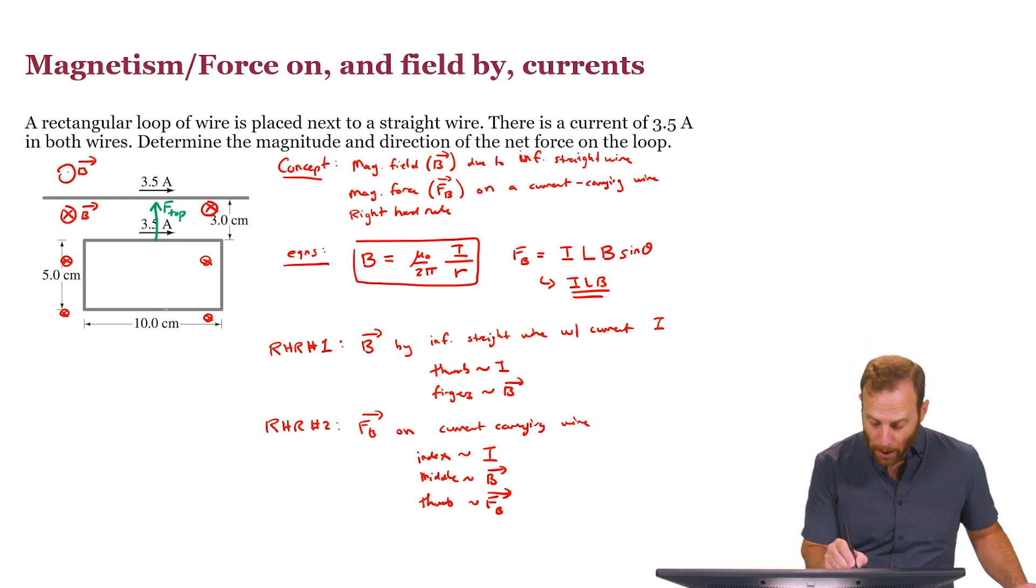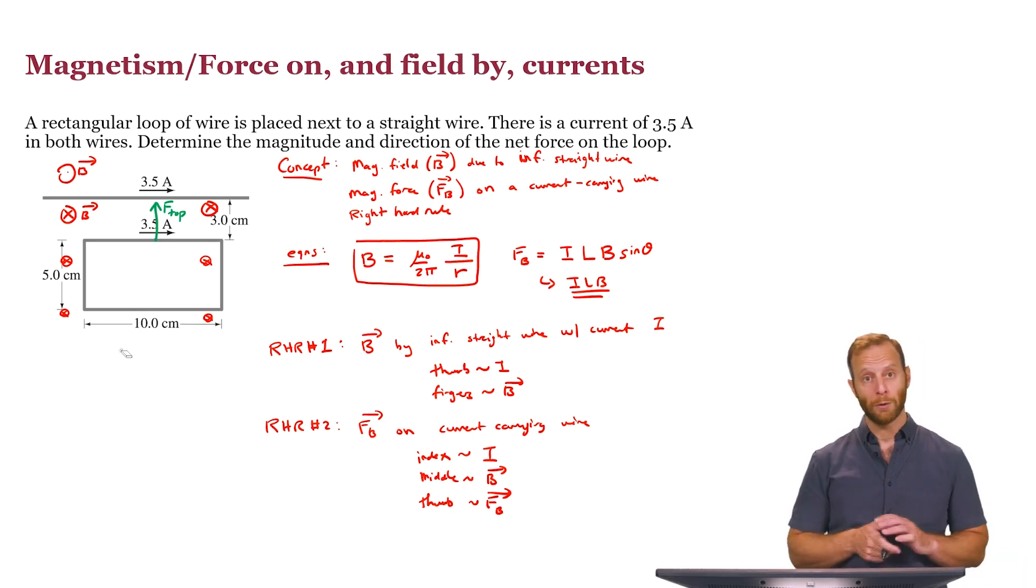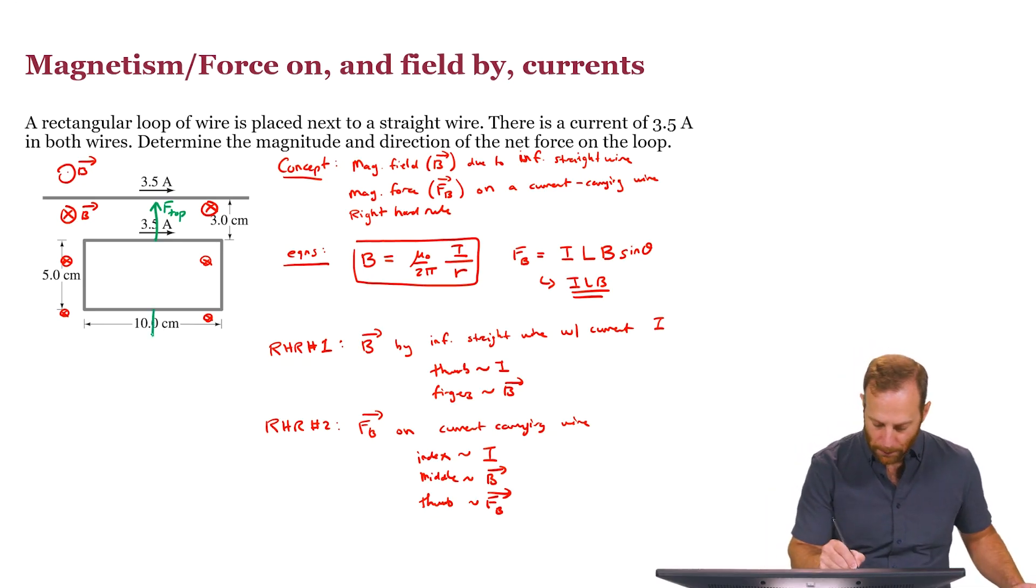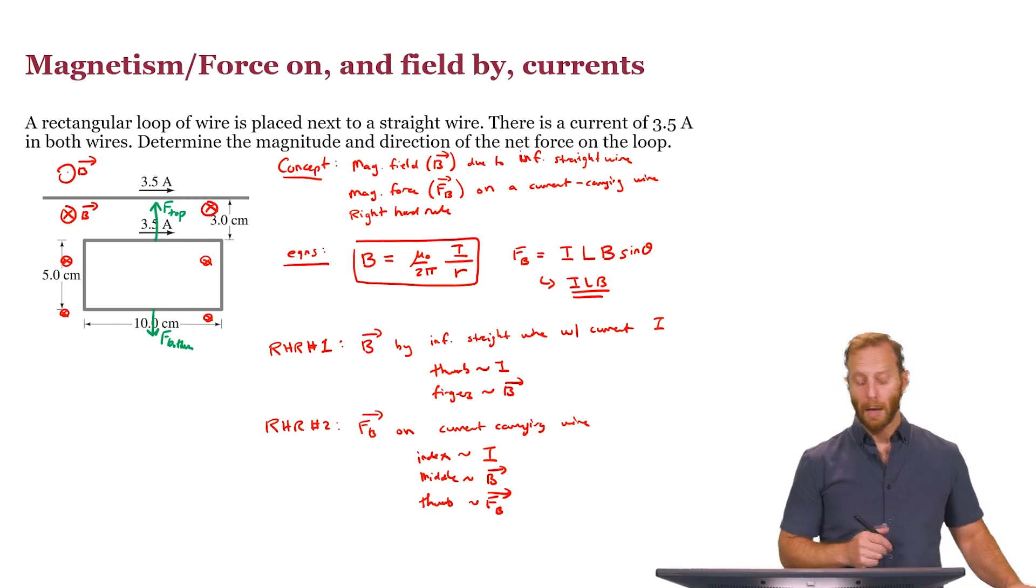For example, on the bottom, the current is going the other direction. That means the force will go the other direction as well. You can check that quickly to the left in, and the force is pointing down.